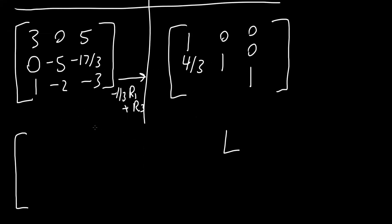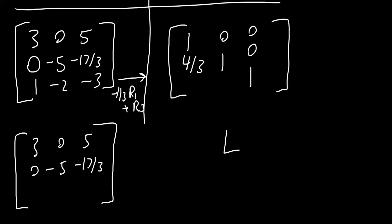So now: 3, 0, 5 remains the same; 0, negative 5, negative 17/3 remains the same. For the third row: negative 1/3 times 3 is negative 1 plus R3, so negative 1 plus 1 gives us 0. Next, negative 1/3 times 0 is 0 plus R3, which is negative 2, so it remains negative 2. Lastly, negative 1/3 times 5 is negative 5/3 plus R3, which is negative 3. So negative 5/3 minus 3 gives us negative 14/3. And by the same rule, since we used negative 1/3, this entry in L becomes positive 1/3. And now we have one more — we need to make this entry 0.